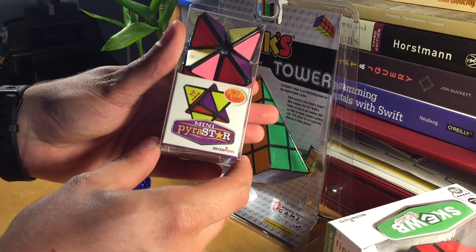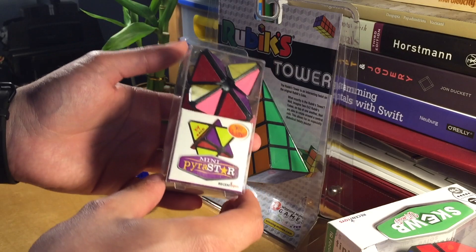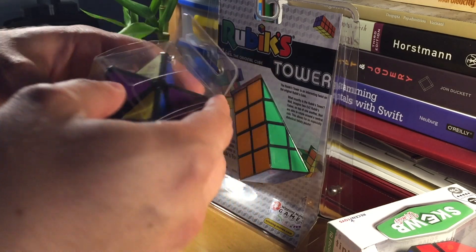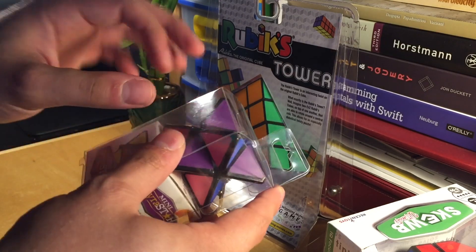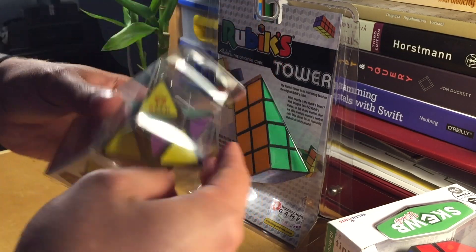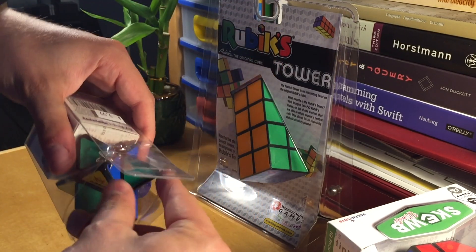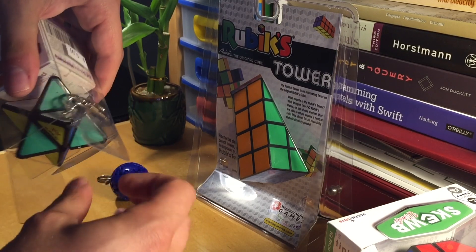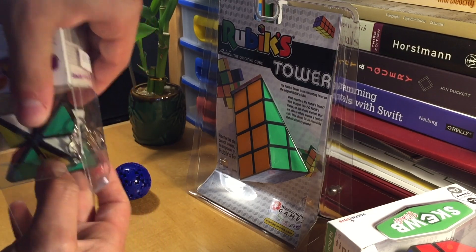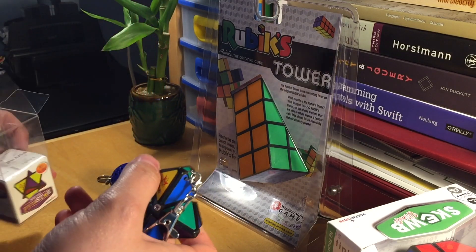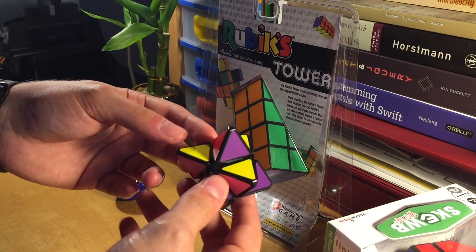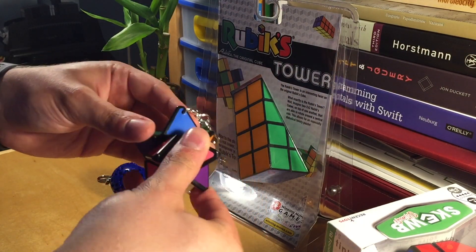Next up here we have the mini pyrastar. This is a 2x2 shape modification with the corners replaced with the triangular tips of a Pyraminx. Yet again another Mefferts puzzle, and this shouldn't really be too difficult to solve because it's just a 2x2 shape mod, though there are a lot of really difficult shape mods.